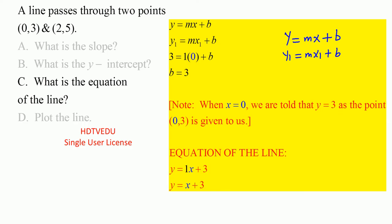What is y₁? Y₁ is 3. Slope is 1. What is x₁? x₁ is 0 plus b. So what do we get for b? b is equal to 3.